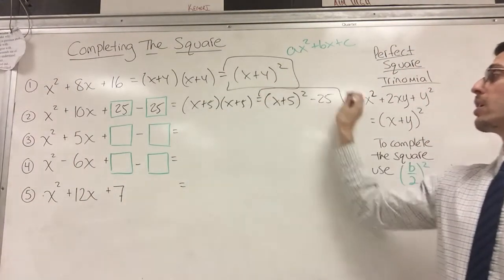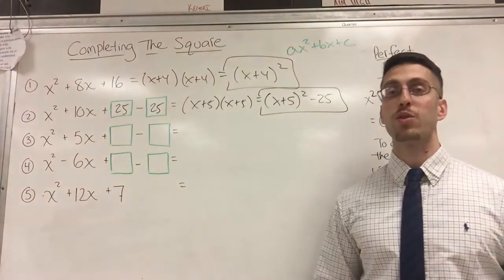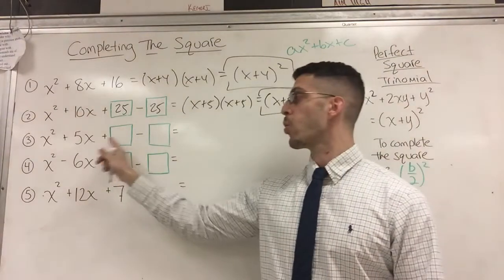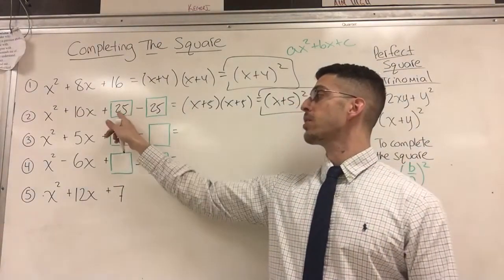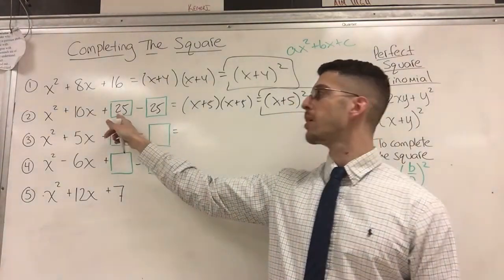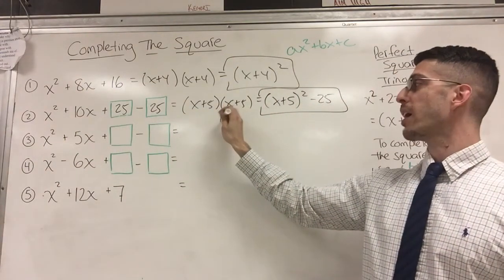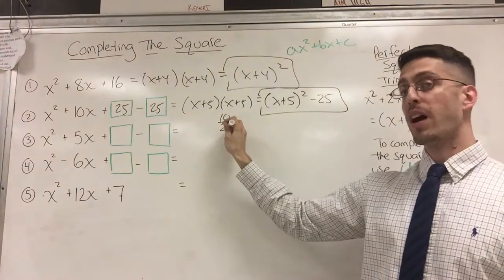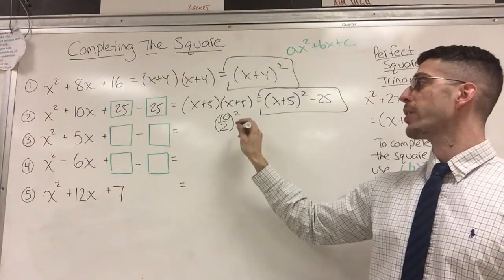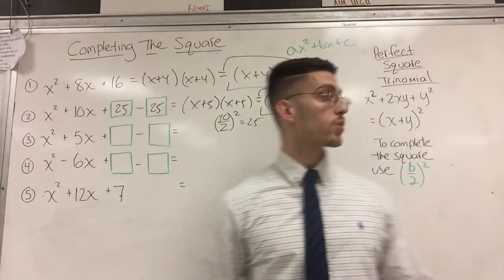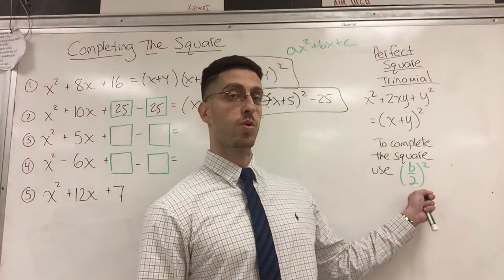Starting to get the hang of it? Try this next one. What if it's an odd number? What goes here? Well, think about this number. How did you get to 25? 10 divided by 2 squared. Remember that. 10 divided by 2 is 5. And then you square it. And that's how I knew to put a 25 here. So that's why I said use b/2 squared.